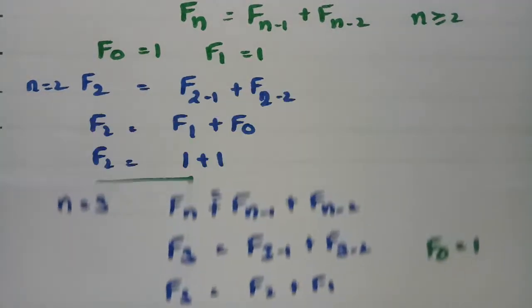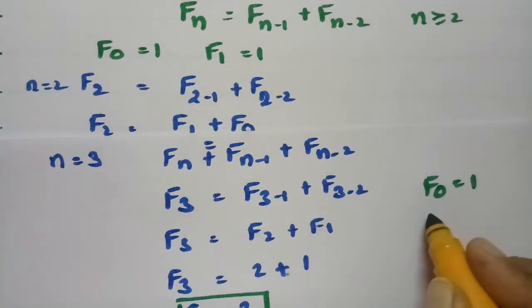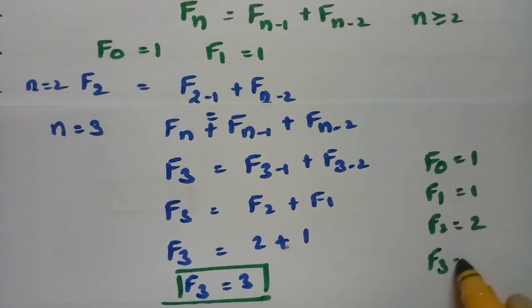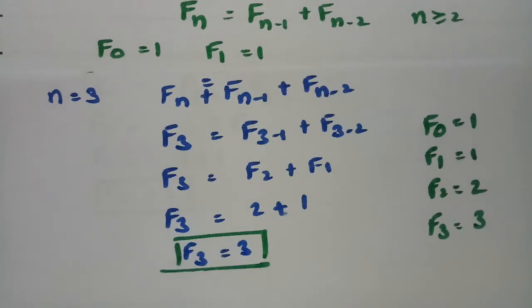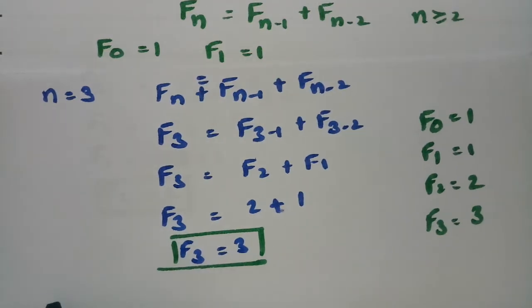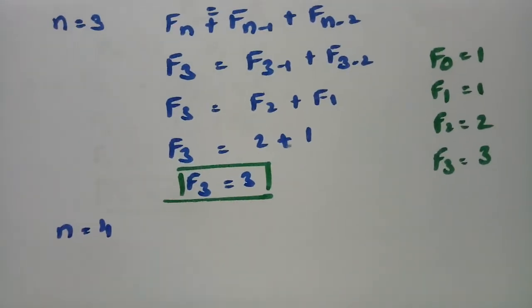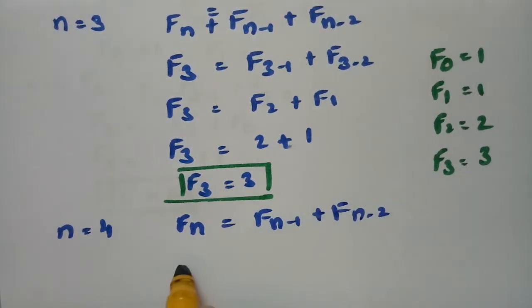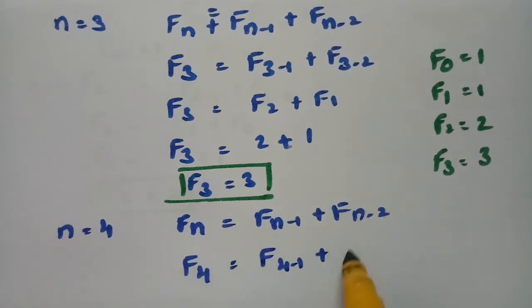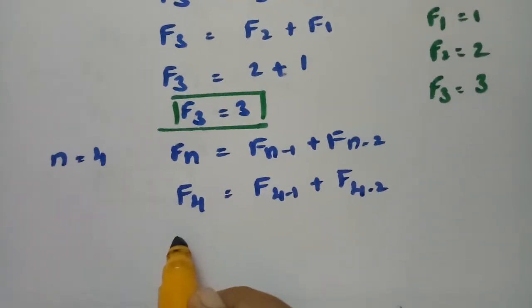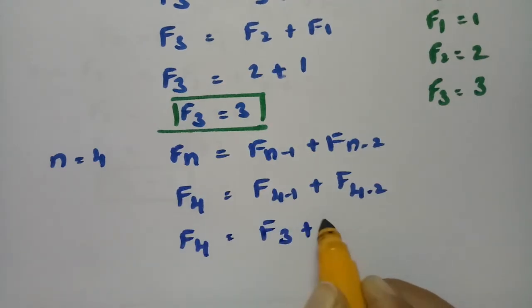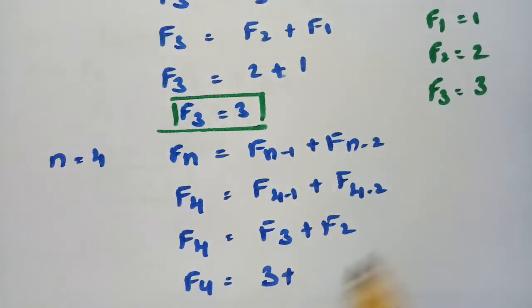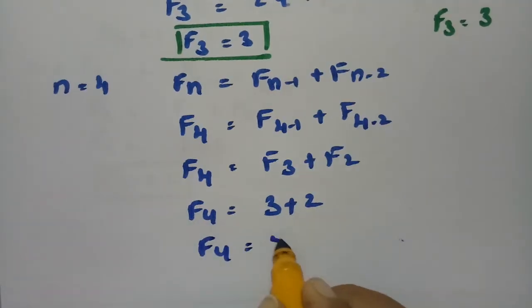With F0 = 1, F1 = 1, F2 = 2, and F3 = 3, we now compute F4. Using Fₙ = Fₙ₋₁ + Fₙ₋₂ with n = 4: F4 = F3 + F2 = 3 + 2 = 5.